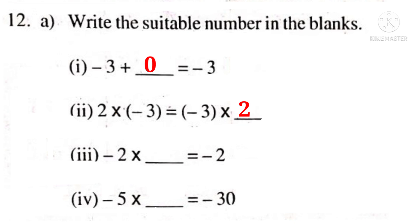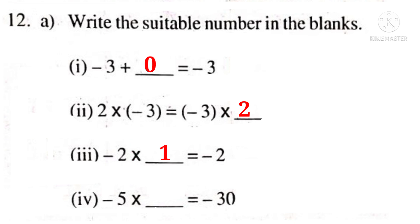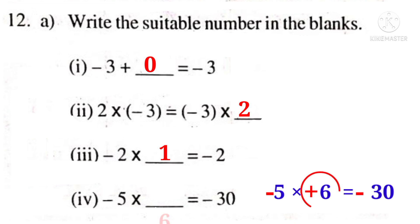Problem 3: observe the number minus 2 on left hand side and also on right hand side. It is possible only when it is multiplied with the number 1. So, 1 is the answer. 1 is the multiplicative identity. Problem 4: minus 5 into dash is equal to minus 30. We know that 5 into 6 is equal to 30. But minus into plus is minus. So, the answer should be plus 6. In the blank, 6 is the answer.